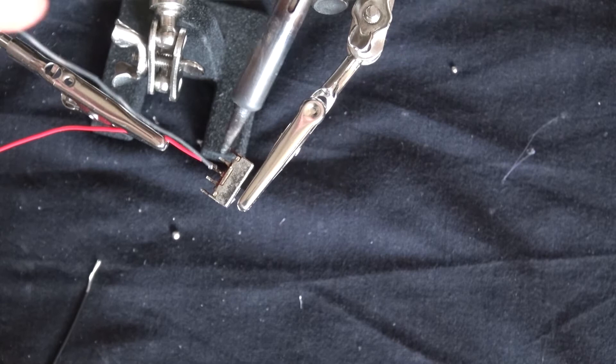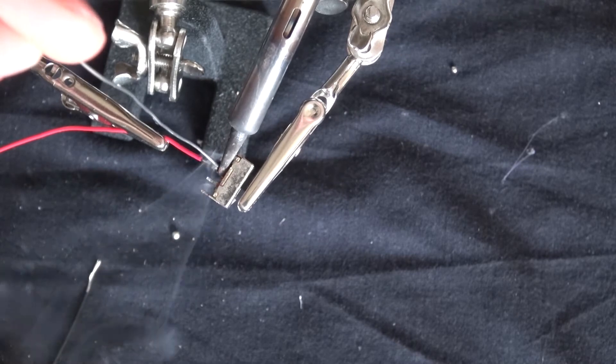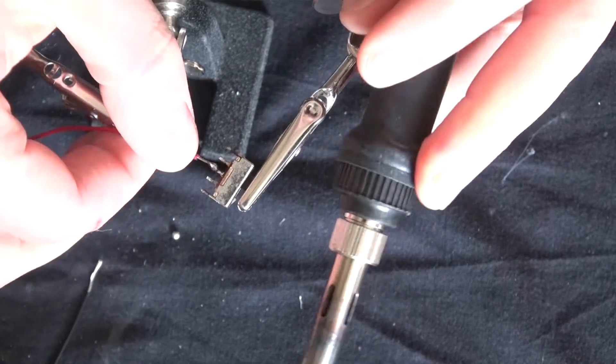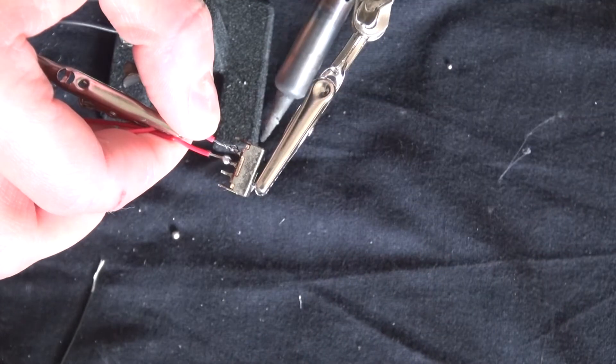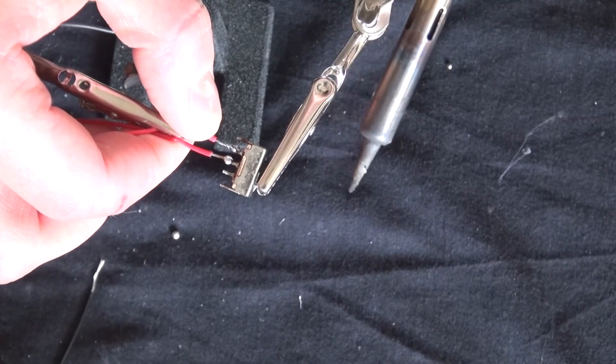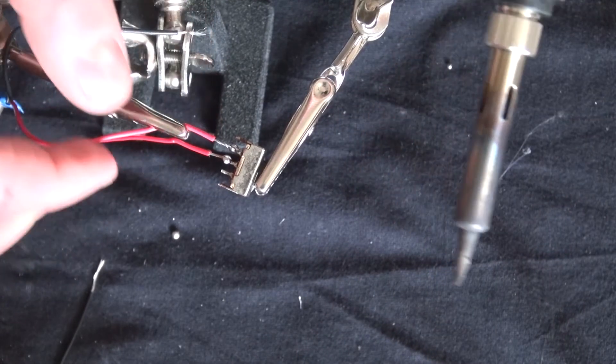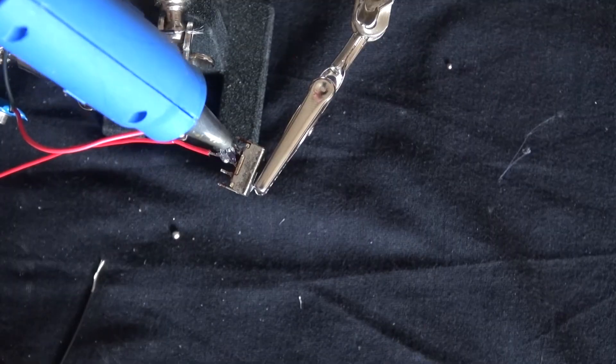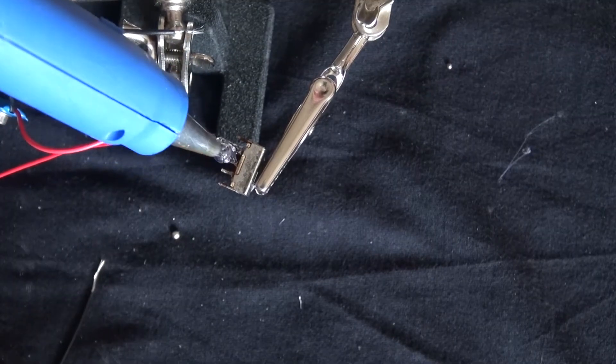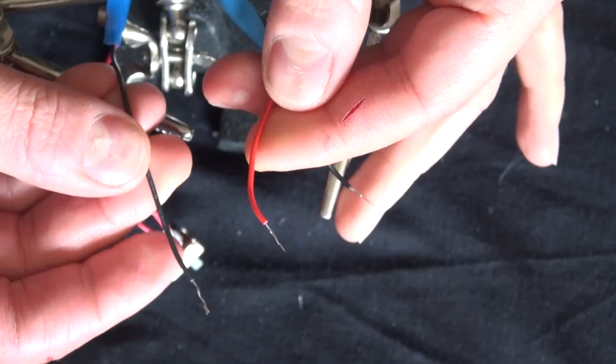And here we go. Now I'm going to solder some wires to the switch. Now I'm going to put some hot glue to prevent the switch from touching any other circuits and shorting the light bulb.